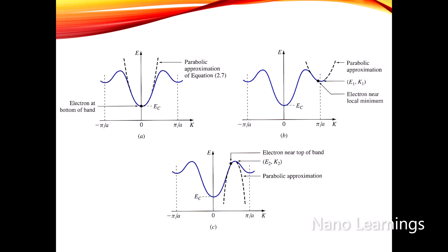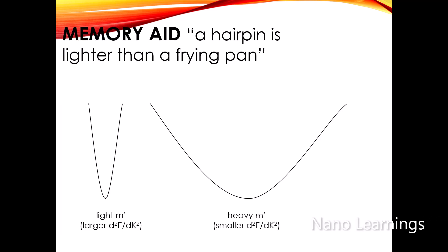As we have learned, the effective mass is inversely proportional to the double derivative of the E-k diagram. In the left-hand side of the diagram, the effective mass is small, and in the right-hand side of the diagram, the effective mass is large. And so the memory aid is: a hairpin is lighter than a frying pan.